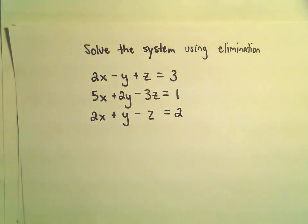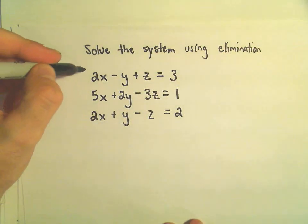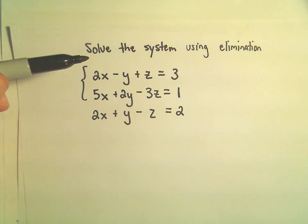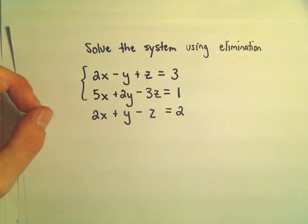The basic idea is you take two of the equations, it doesn't matter which two, and you have to eliminate either the x, the y, or the z, and then we take two different equations.